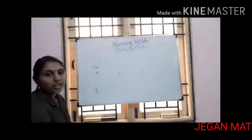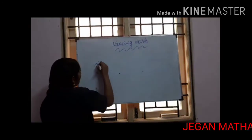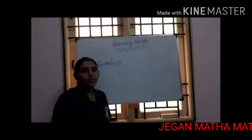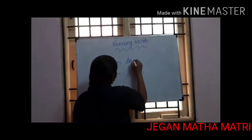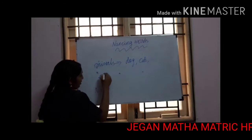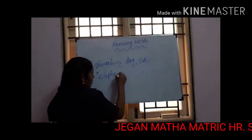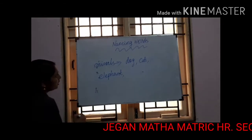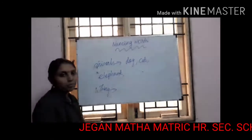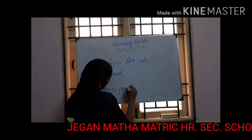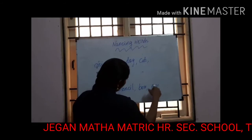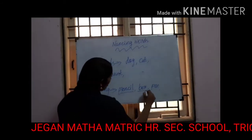Now you have to tell me animal names. Tell me, children — any animal name? Dog, cat, and elephant. Those are animal names. Then for things, you have to tell me: pencil, box, and pen.